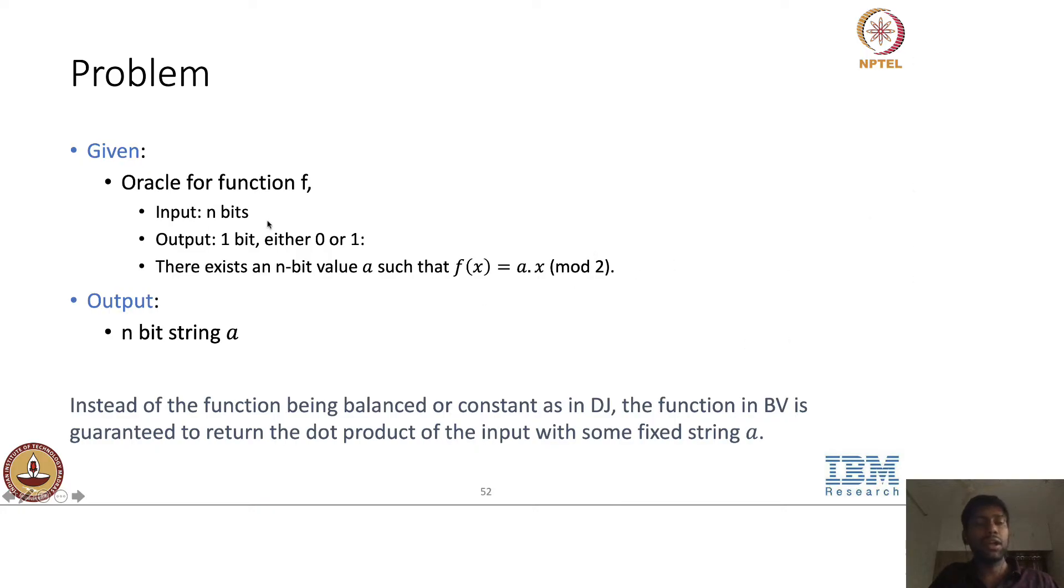So the goal for Bernstein-Vazirani, or the goal for this problem is to output this n-bit string a that's embedded in f. So given an oracle access to this f, which has a embedded in it, the goal is to output this n-bit string a.